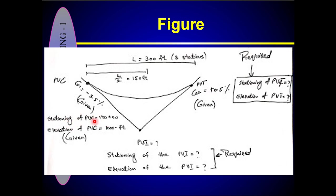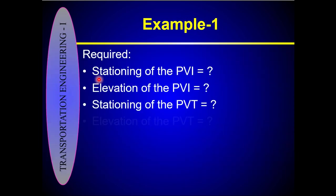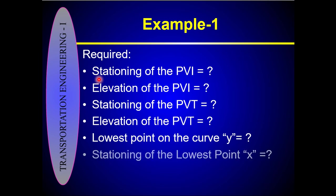The stationing and elevation of the PVC is already known. You have to calculate the stationing and elevation of the PVI, the stationing and elevation of the PVT, and the stationing and elevation of the lowest point on the curve. The length of the curve is also known. Since it is an equal tangent sag vertical curve, half the curve — 300 feet — is on the left side and 300 feet is on the right side.